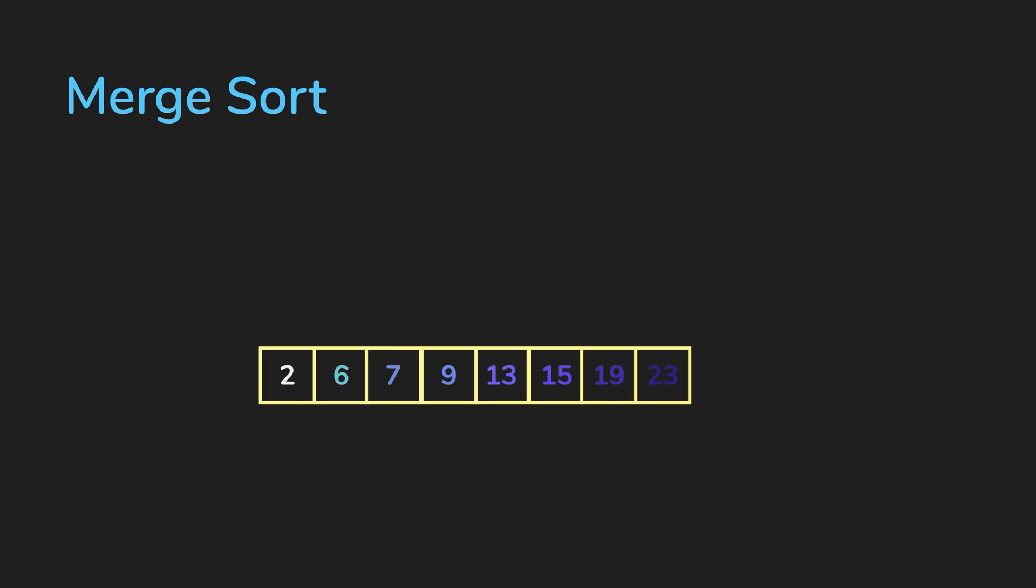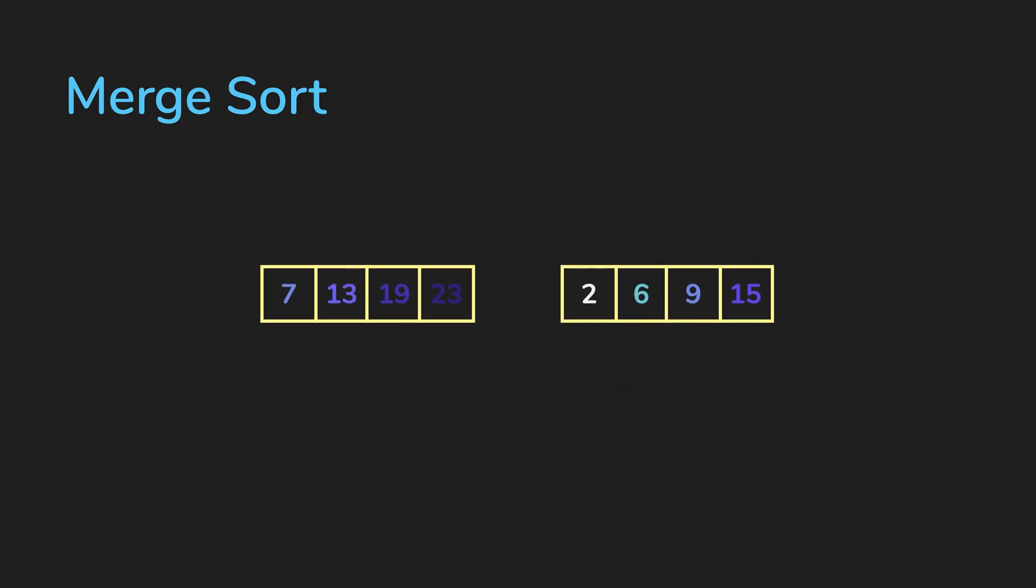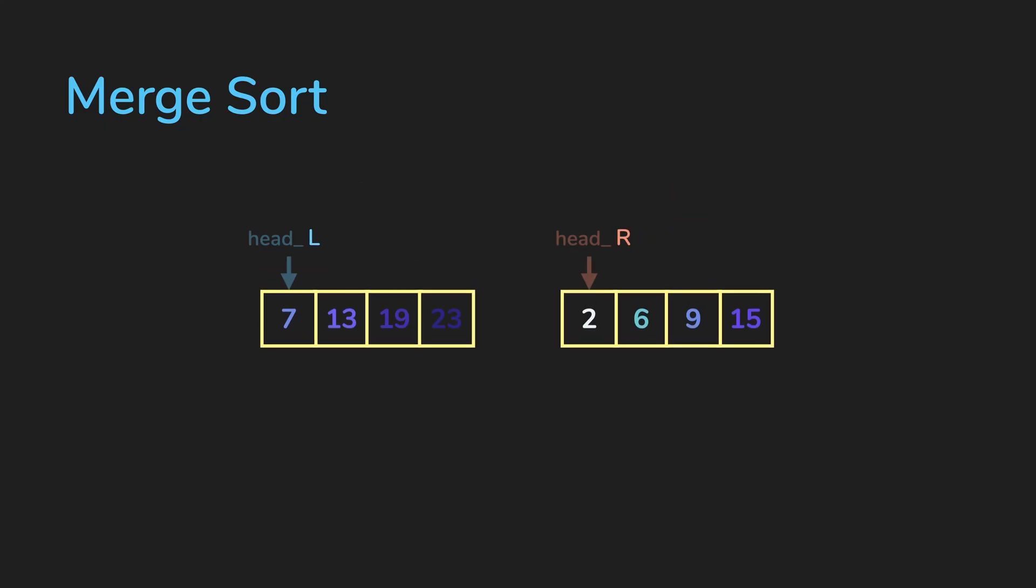So how would we do that? Let's say we have a sorted array L and a sorted array R for left and right. Then if we want to merge them into a single sorted array, we will need to start by looking at the smallest of both arrays, which is the head of each array.